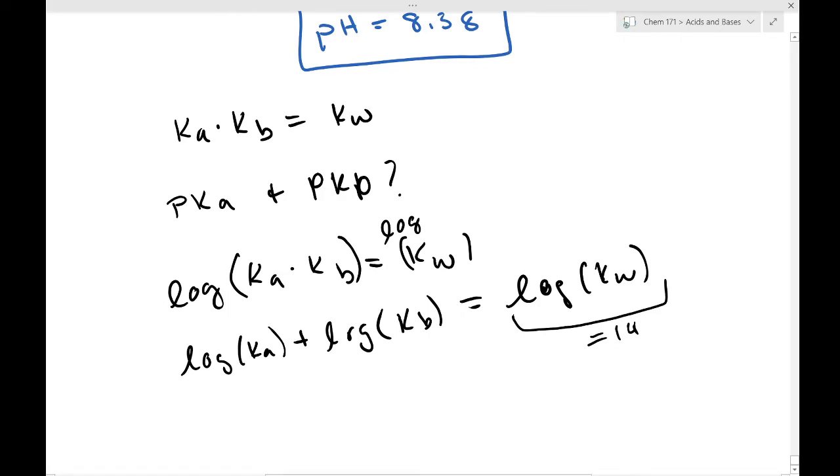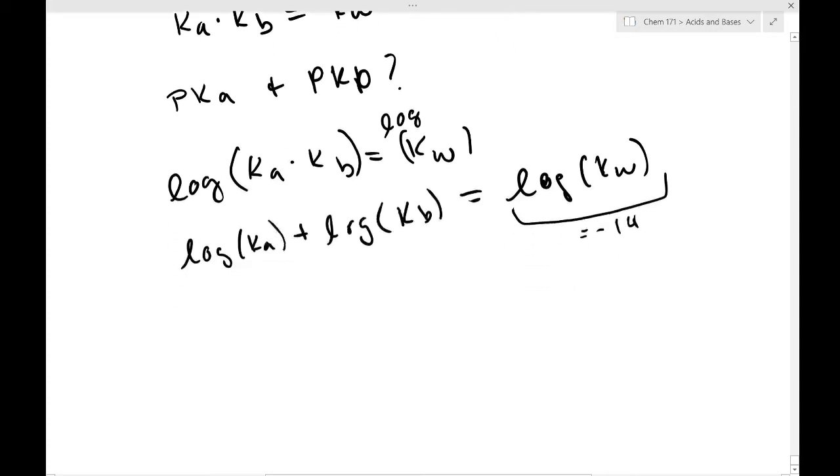Then we end up with the log of Ka plus the log of Kb, due to the identity of logarithms, is equal to the log of Kw. Okay, next, if we take the negative of the whole thing, by the way, this whole part here is equal to 14, right? Kw is equal to 1.0 times 10 to the minus 14.